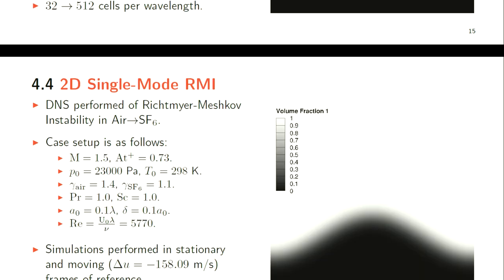The next test case is a 2D single-mode Richtmyer-Meshkov instability between air and SF6. The case setup is a Mach 1.5 shock with pressure and temperature there, and the ratio of specific heats of both species. We make the assumption just for simplicity that the Prandtl and Schmidt numbers are both one. The initial amplitude is a tenth of the wavelength so we're roughly at the end of the linear regime. We also have an initial diffuse interface so we can fully resolve the interface. The Reynolds number based on the Richtmyer velocity, the wavelength, and the average viscosity is around 5000. We perform simulations in both a stationary and a moving frame of reference - stationary is the laboratory frame of reference and moving frame is in the post-shock reference frame.